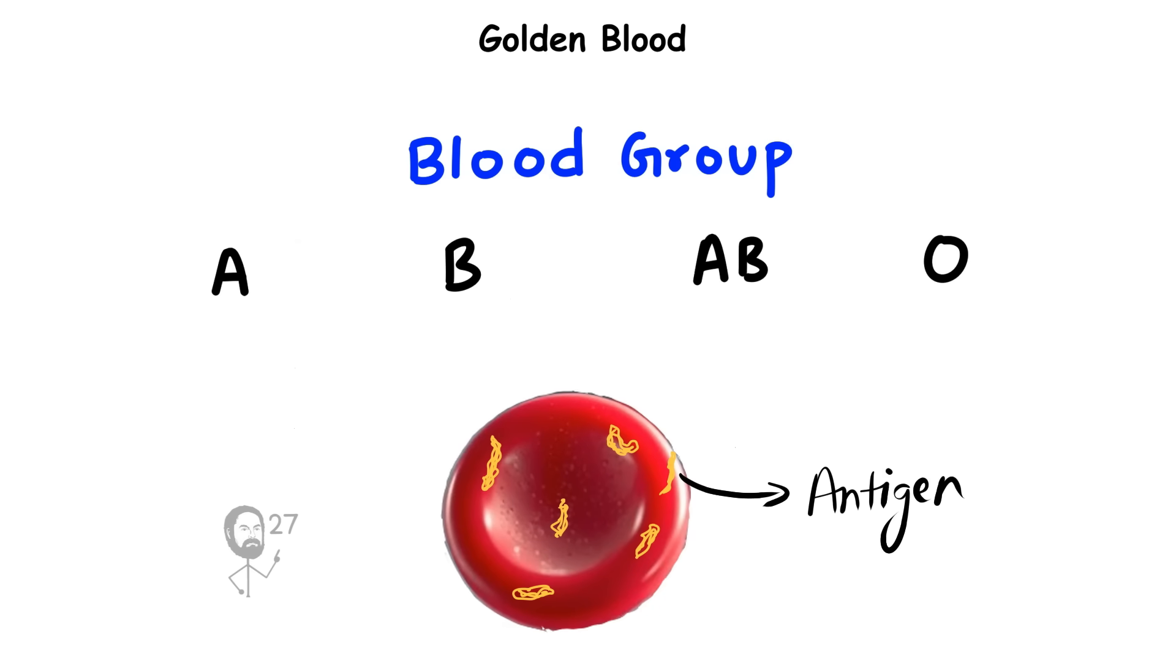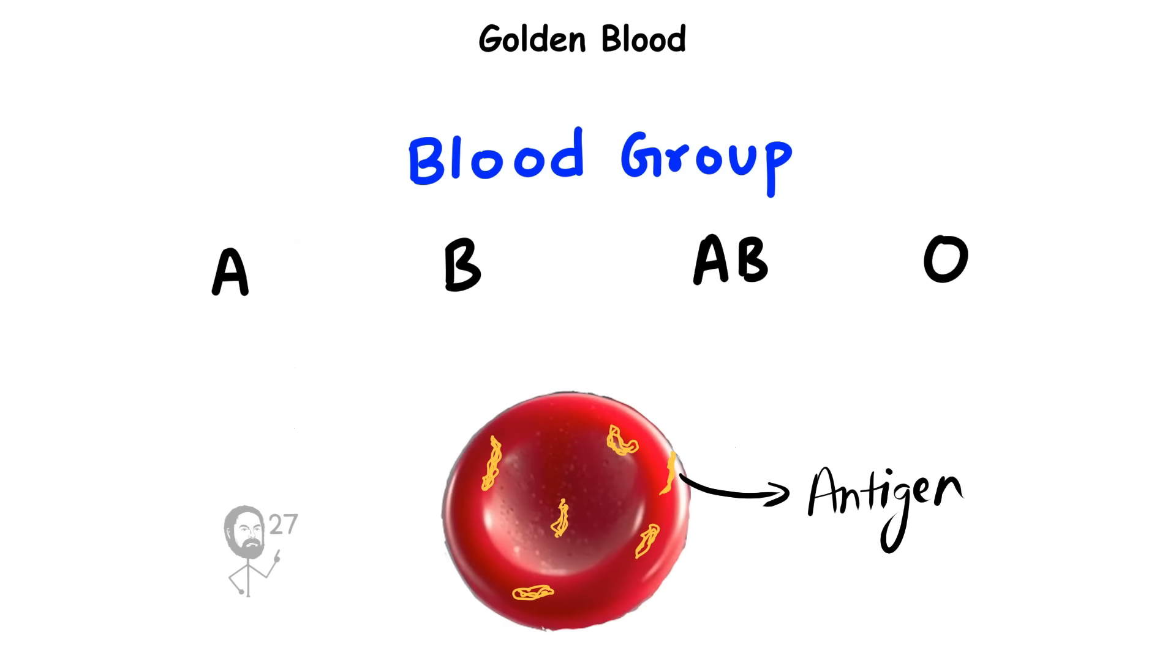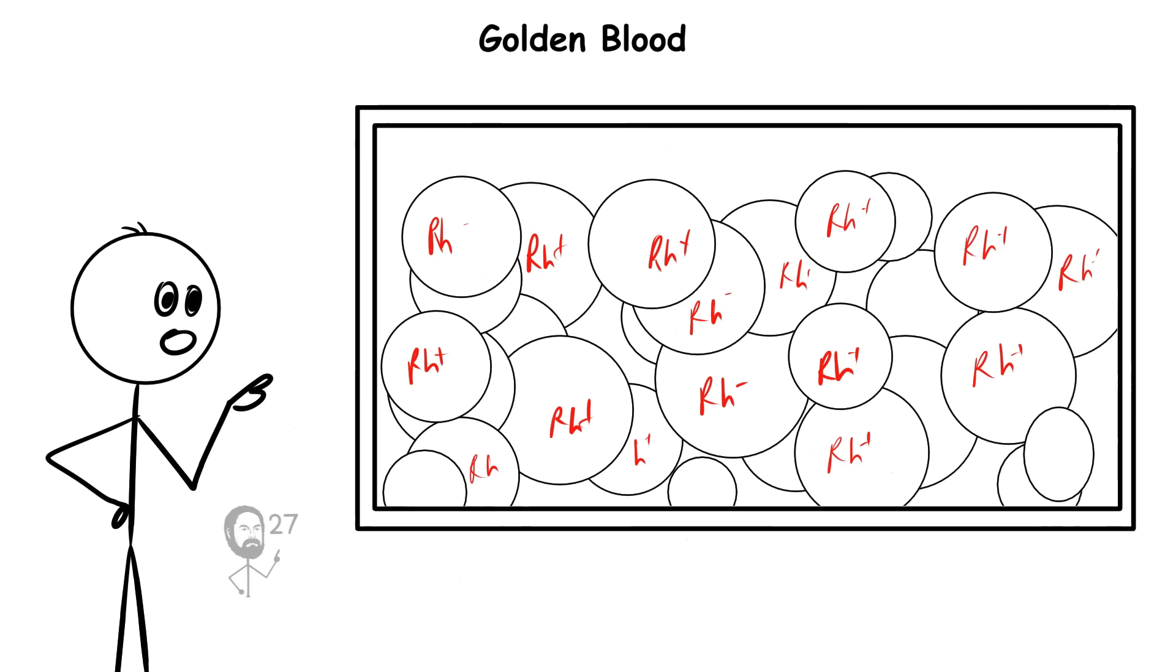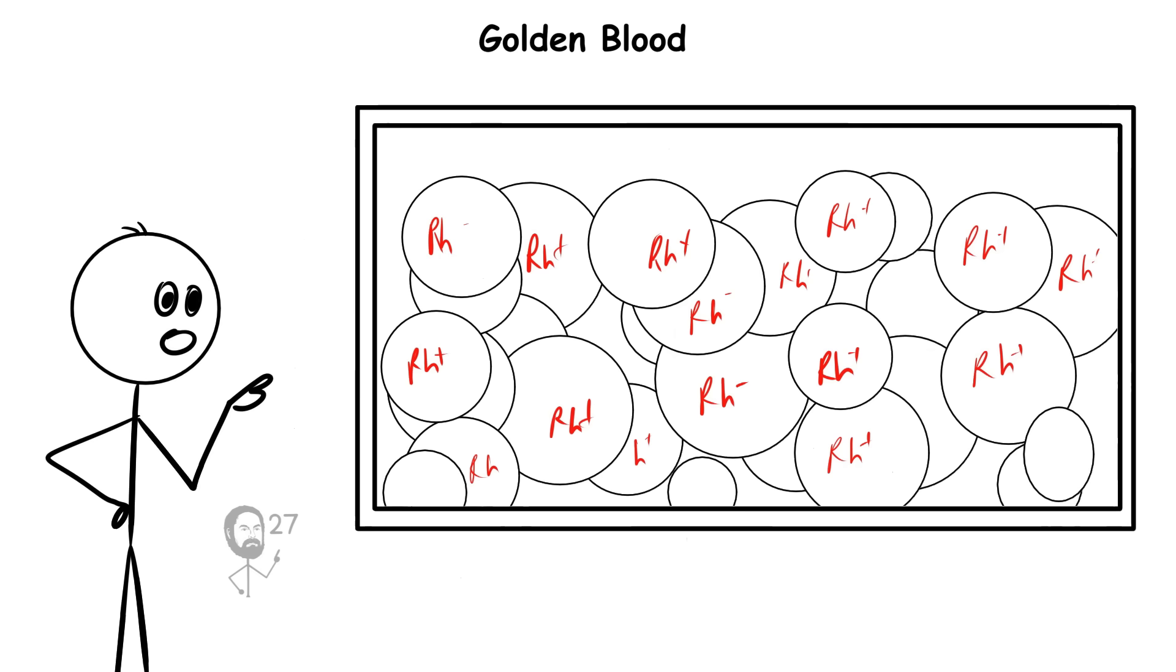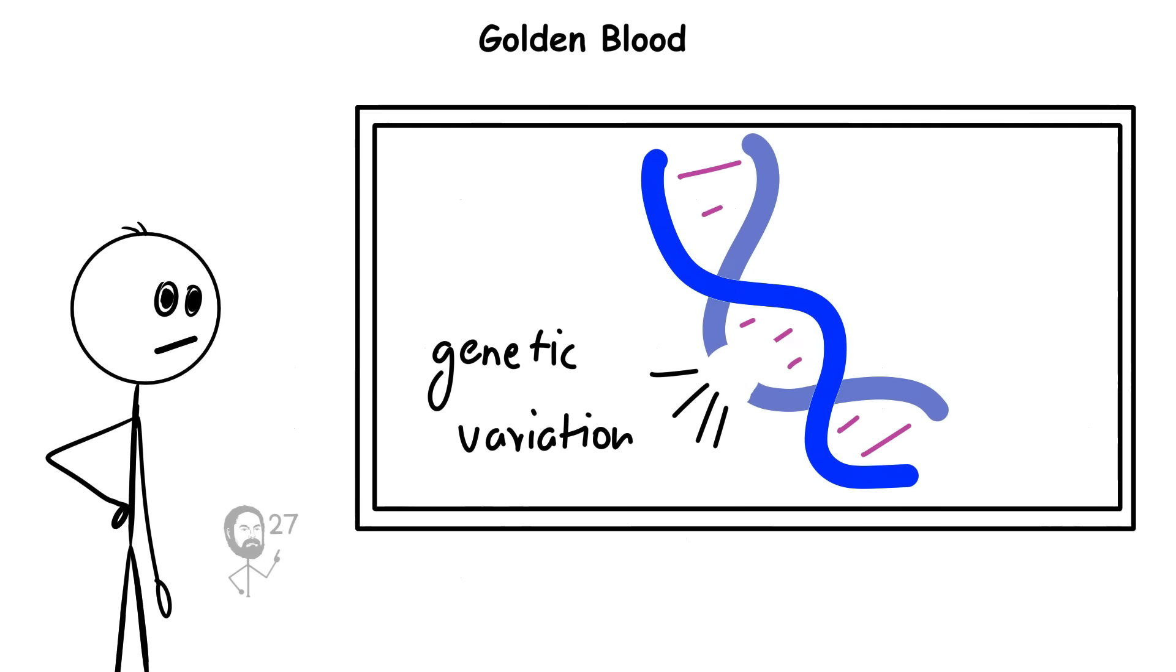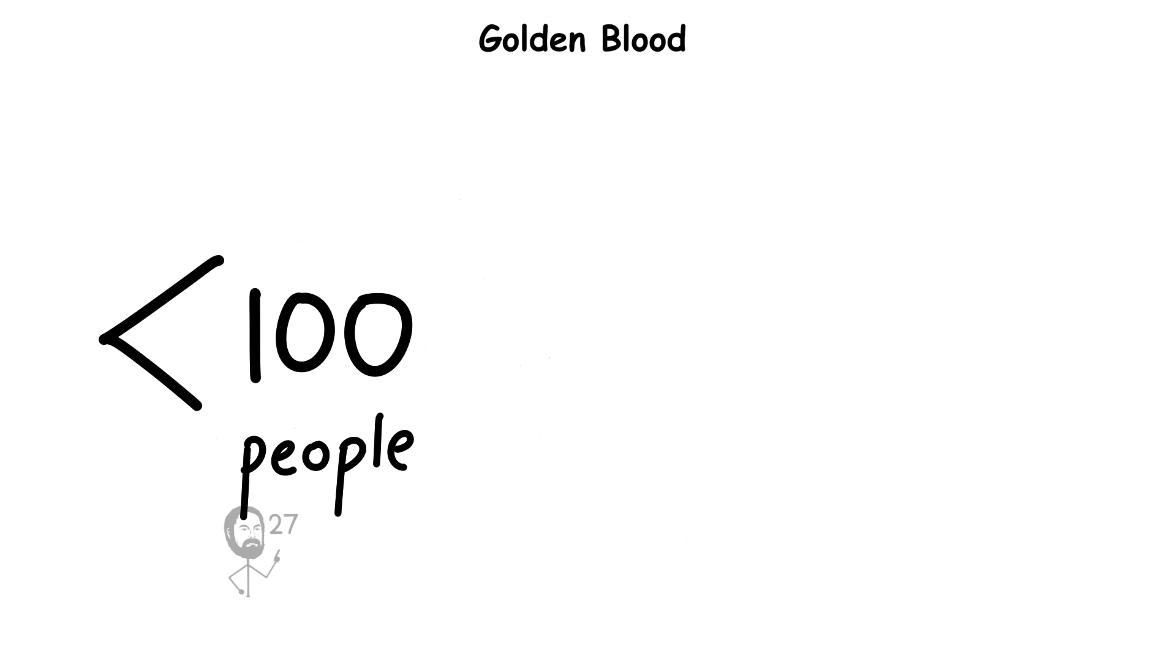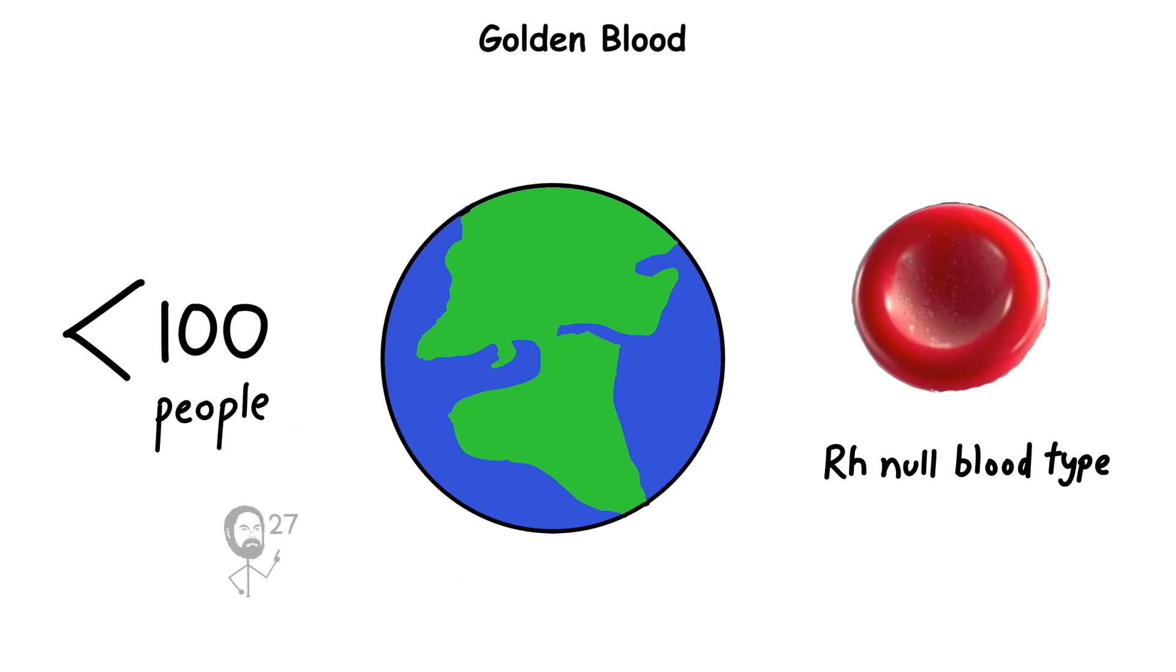Golden blood. Blood groups are determined by antigens on the surface of red blood cells. The Rh system is one of the most significant, with most people carrying at least some form of Rh antigen. A vanishingly rare genetic variation completely removes them, producing what is called Rh-null blood. Fewer than 100 individuals worldwide are known to have it, making it the rarest blood type on record.